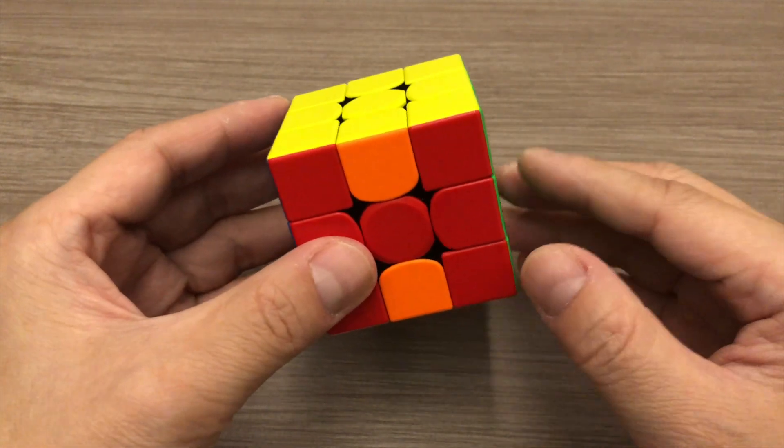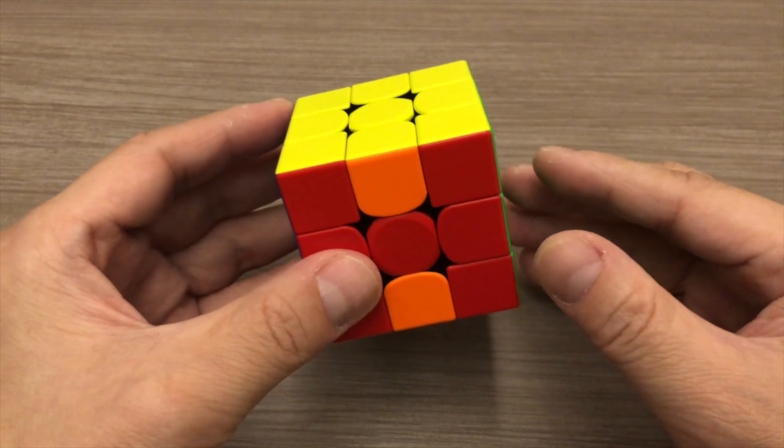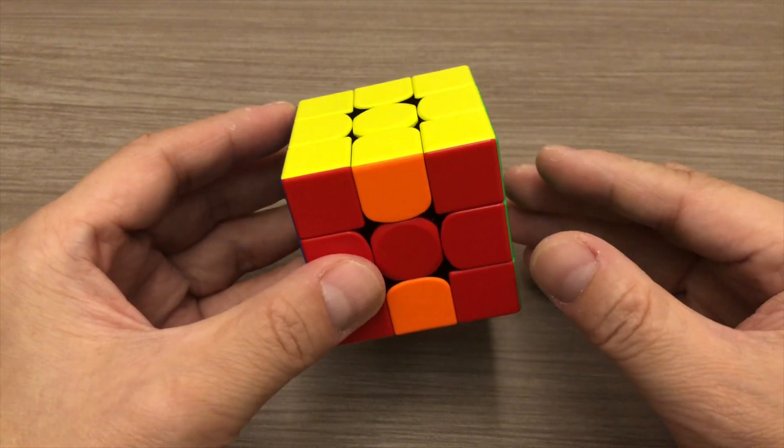In total, there are 3 patterns that you need to look out for. And for each pattern, you will apply the correct algorithm to solve the entire cube.